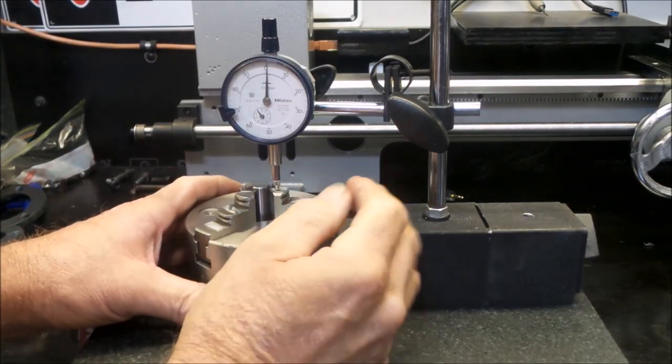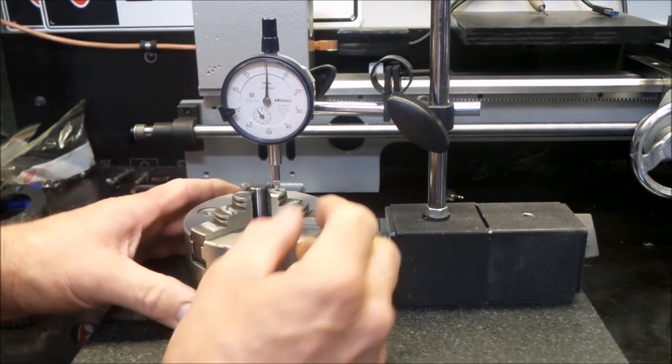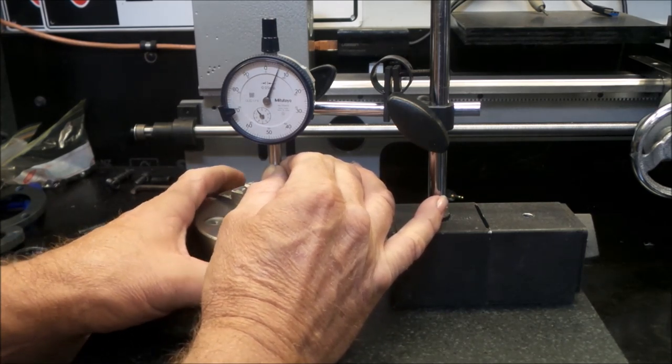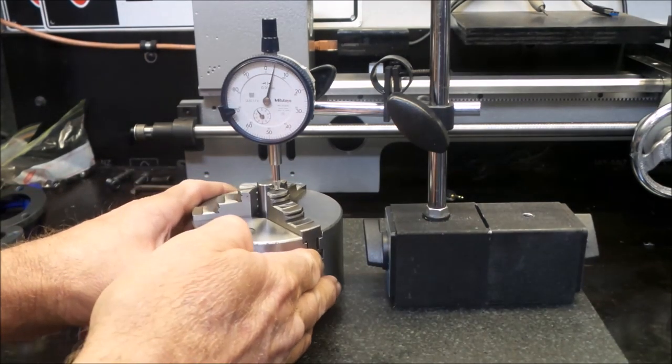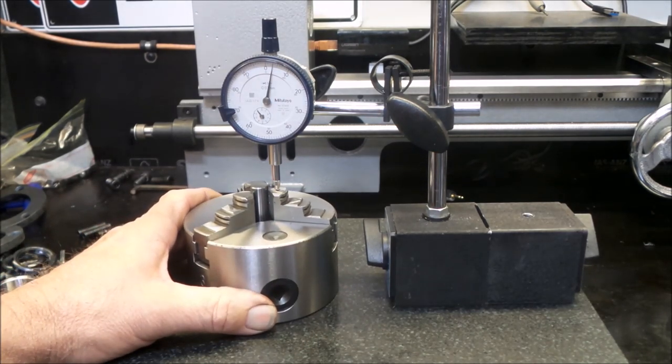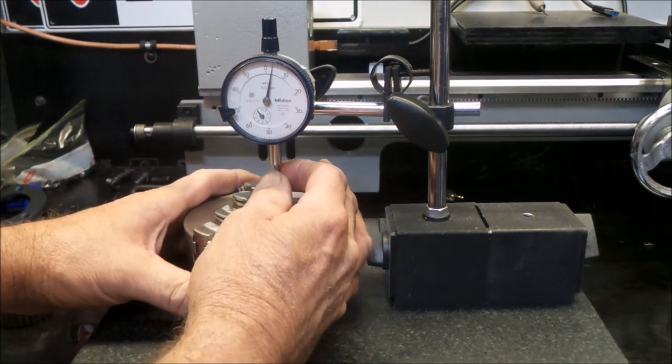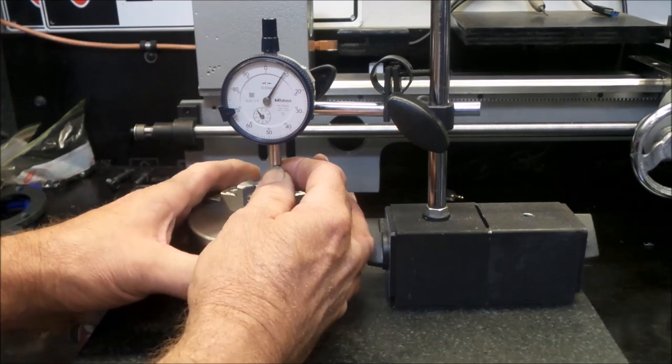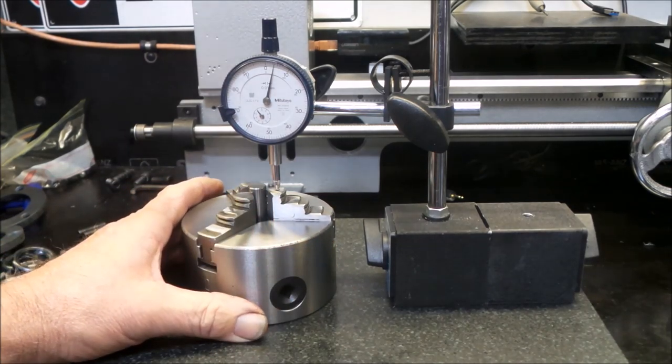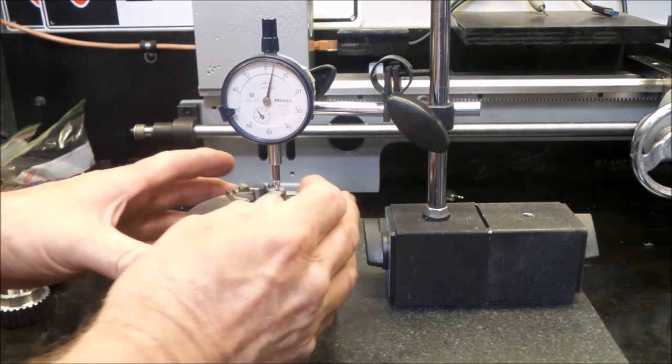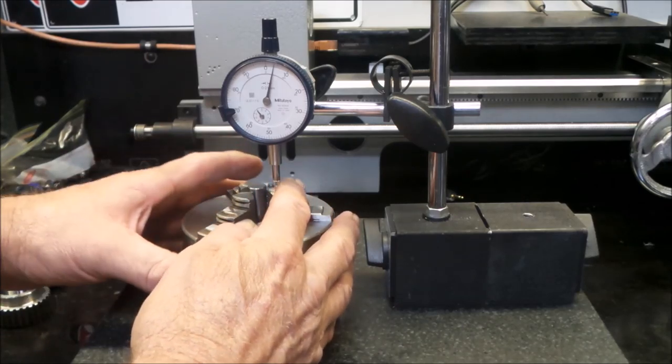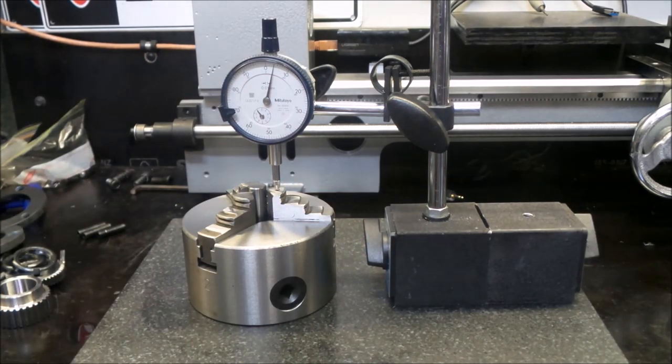So, here we go. Let's have a look at how these jaws shape up straight out of the box. I've just zeroed the indicator out on the top of this first jaw. I'll just go across to the top of the next one. And that one appears to be about three one-hundredths higher than the first one. And the top of that jaw is about four one-hundredths higher. Okay. So at the moment, this guy's the highest on that step.